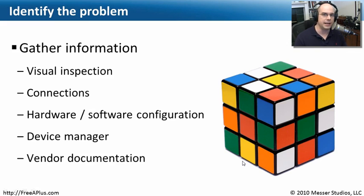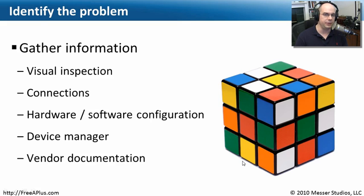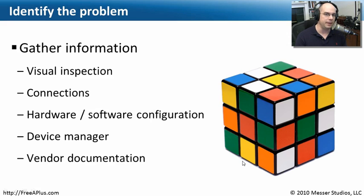Another good way to gather information is to look inside and outside the computer — do a visual inspection. Make sure dust hasn't accumulated around the fan, and check the connections. If someone is complaining about a mouse and keyboard, are they plugged in properly? Do you have good connections on the USB ports? Look at the hardware and software configuration to make sure the device is configured the same as all others. You may find information in Device Manager — if there's a hardware failure, it will show up clearly there. You may also want to check the vendor's documentation for recommended power or video settings.